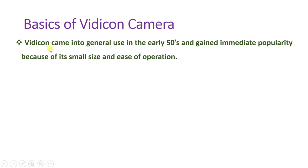The Vidicon camera came into general use in the early 1950s and gained immediate popularity because of its small size and ease of operation. This camera was invented in the 1950s and gained popularity because of its compact size and ease of operation. We will see all those things in detail step by step.